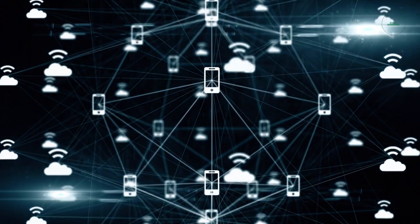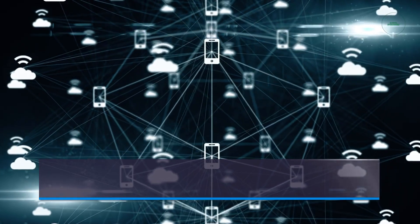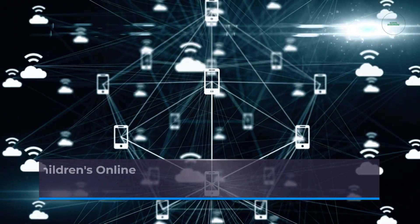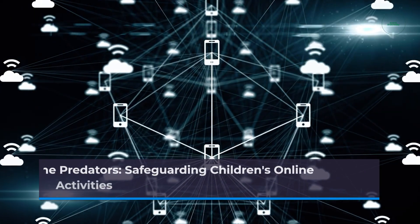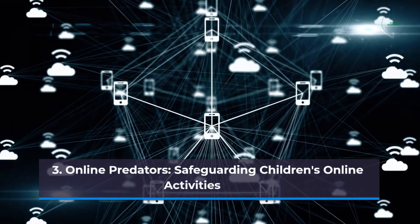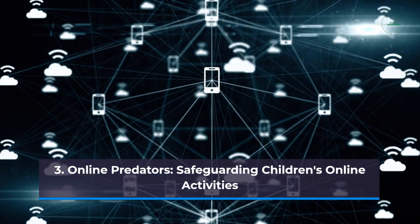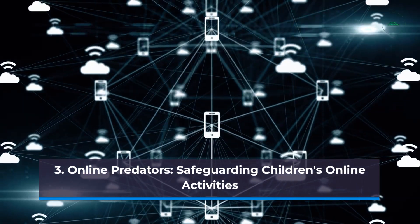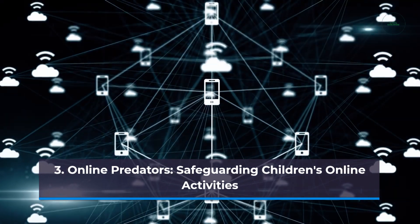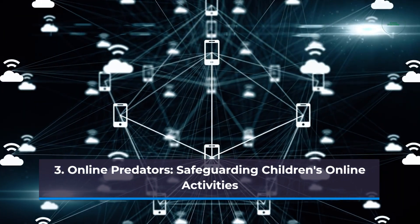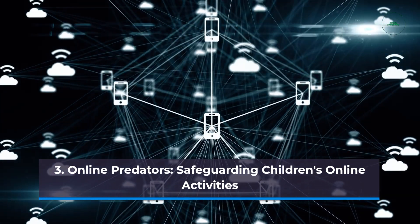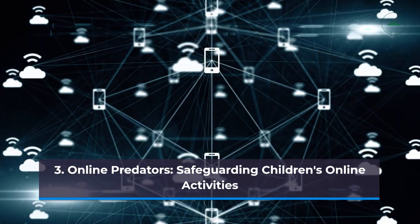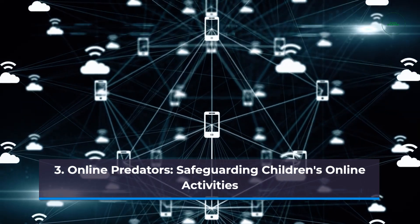The internet poses unique risks to children, who may be unaware of the potential dangers and susceptible to online predators. It is crucial to educate children about safe online practices and monitor their internet usage to protect them from exploitation. To safeguard children, establish open communication and foster a trusting relationship, encouraging them to share any concerns or uncomfortable experiences online. Educate children about the dangers of sharing personal information and interacting with strangers online. Use parental control software to restrict access to age-inappropriate content and monitor their online activities.